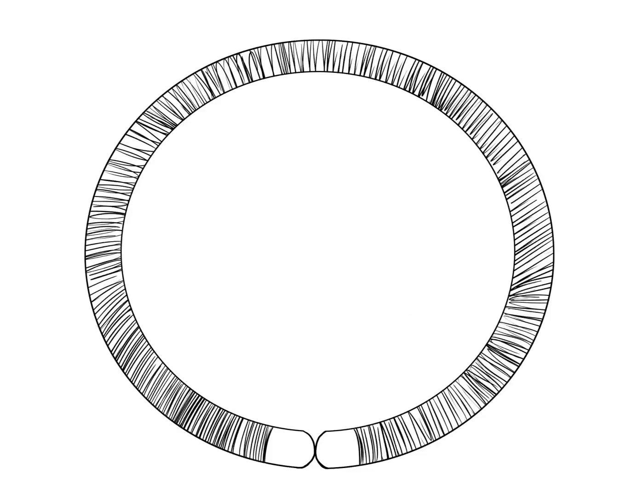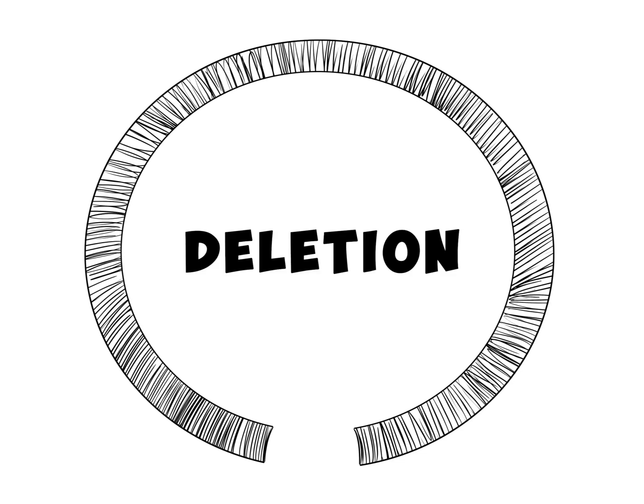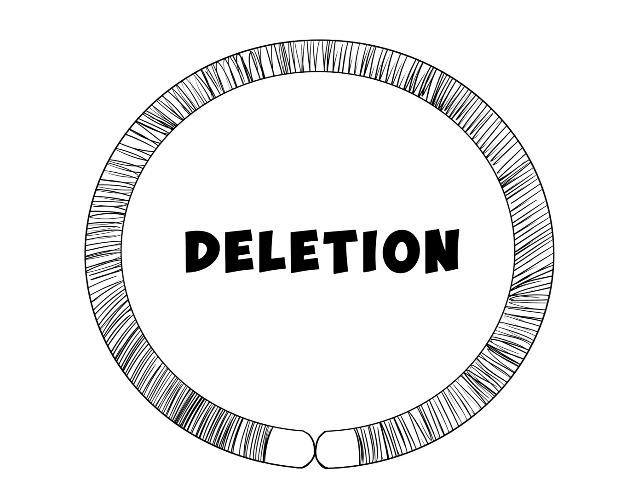Some people with R20 have bits of the ends of the chromosome 20 missing. When this happens, we call it a deletion. Other people with R20 don't have any deletions.